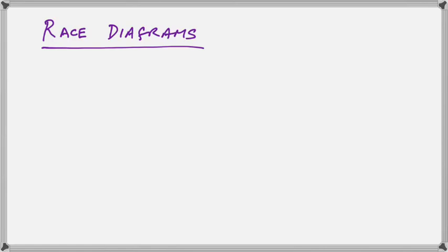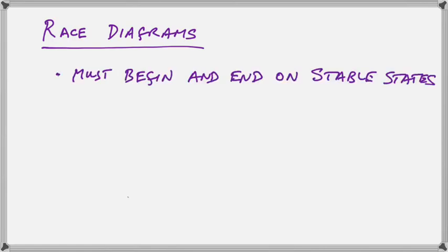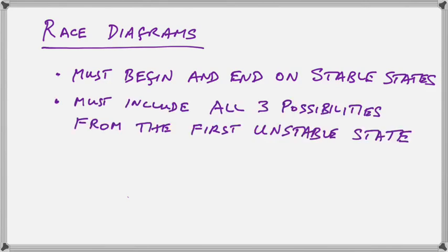First of all, the rules of race diagrams are that they must begin and end on stable states. The second rule is that you must include all three possibilities from the first unstable state at which the race occurs.